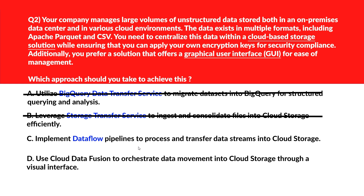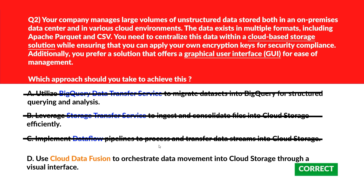Option C says implement Dataflow pipelines to process and transfer data streams into Cloud Storage. Dataflow is optimized for stream processing and transformation rather than centralized storage management with object encryption support — wrong choice. Option D says use Cloud Data Fusion to orchestrate data movement into Cloud Storage through a visual interface. Cloud Data Fusion enables GUI-based pipeline creation and supports object storage sinks with encryption key management, meeting all requirements. Option D is the correct choice.